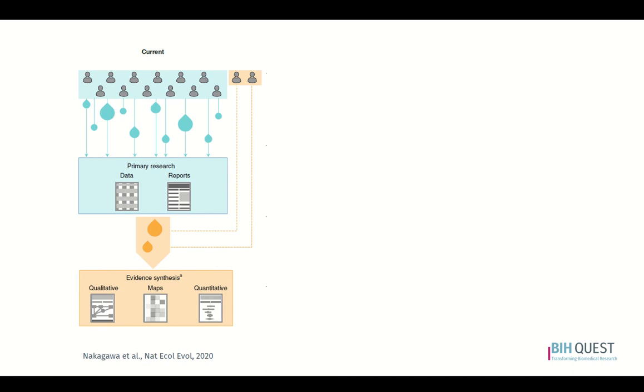Research ecosystems are based on shared, open principles: transparency of research methods and data, both in evidence synthesis and primary research.